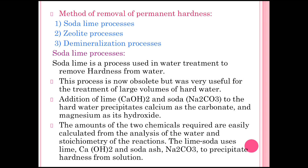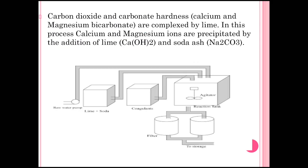The lime-soda process uses lime (Ca(OH)₂) and Na₂CO₃ to precipitate hardness from the solution. We add the two chemicals — soda and lime — to the water. Calcium hydroxide complexes with the carbonate hardness (calcium and magnesium bicarbonate), and calcium and magnesium ions are precipitated by the addition of lime and soda.